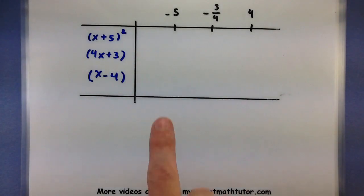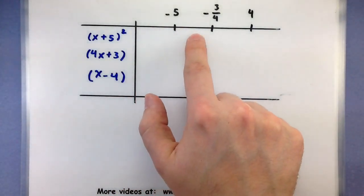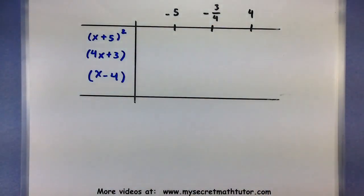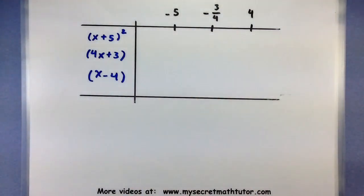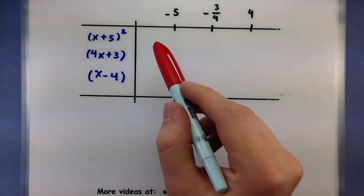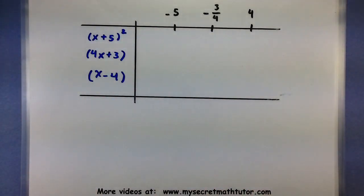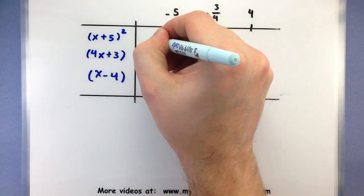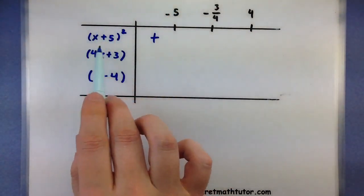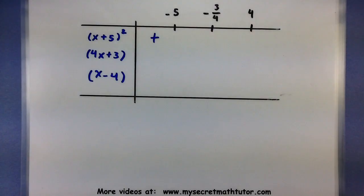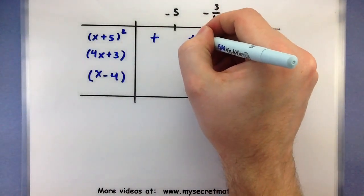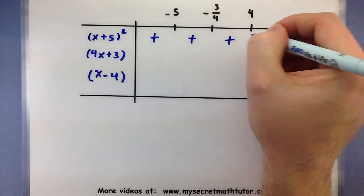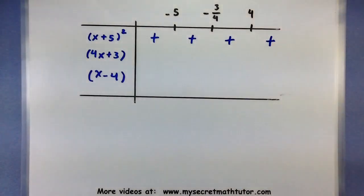Now we get to start testing things out. We'll grab test points from each interval, put them into the factor, and see if they are positive or negative. Let's pick something less than negative 5, like negative 6. Plugging into x plus 5 squared gives negative 1 squared. Since it's being squared, it makes it positive. In fact, since this factor is always squared, no matter what you put in it will always be positive.